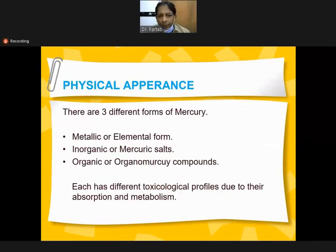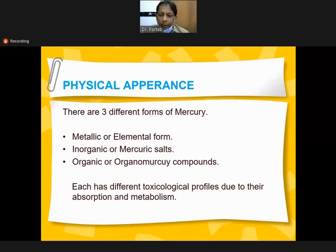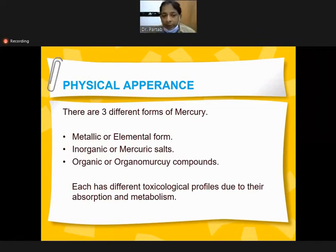The physical appearance and different forms of mercury: the metallic or elemental forms are commonly used in barometers and thermometers. Inorganic or mercuric salts also cause poisoning. Organic or organo-mercury compounds each have different toxicological profiles due to their absorption and metabolism, different types of action on the body, and absorb in different ways in the human body.